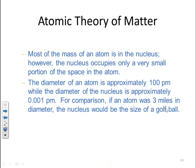The diameter of the atom is approximately 100 picometers, while the diameter of the nucleus is approximately 0.001 picometers. For comparison, if an atom were three miles in diameter, the nucleus would be the size of a golf ball.